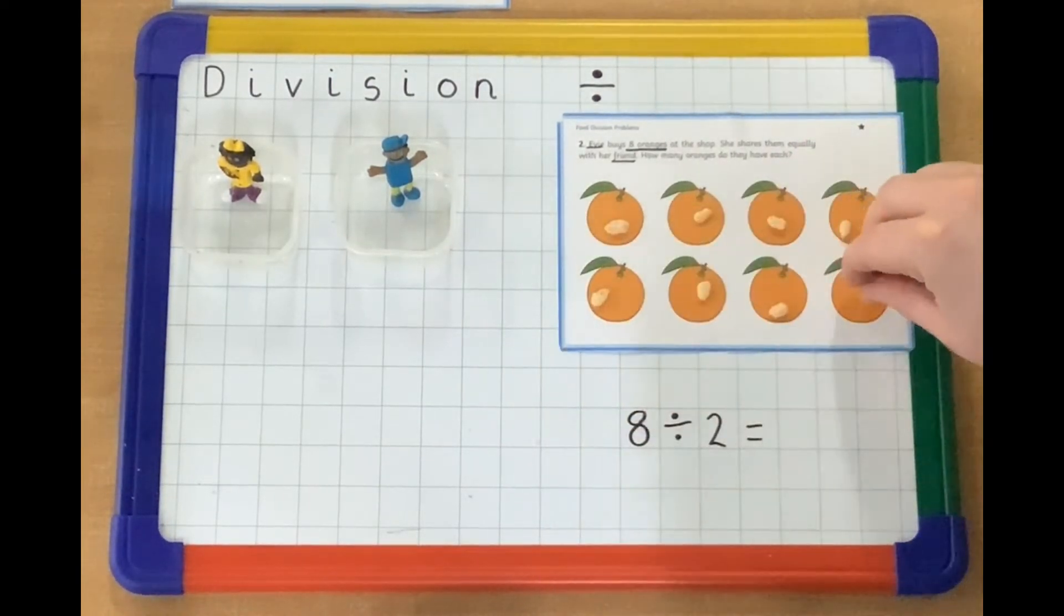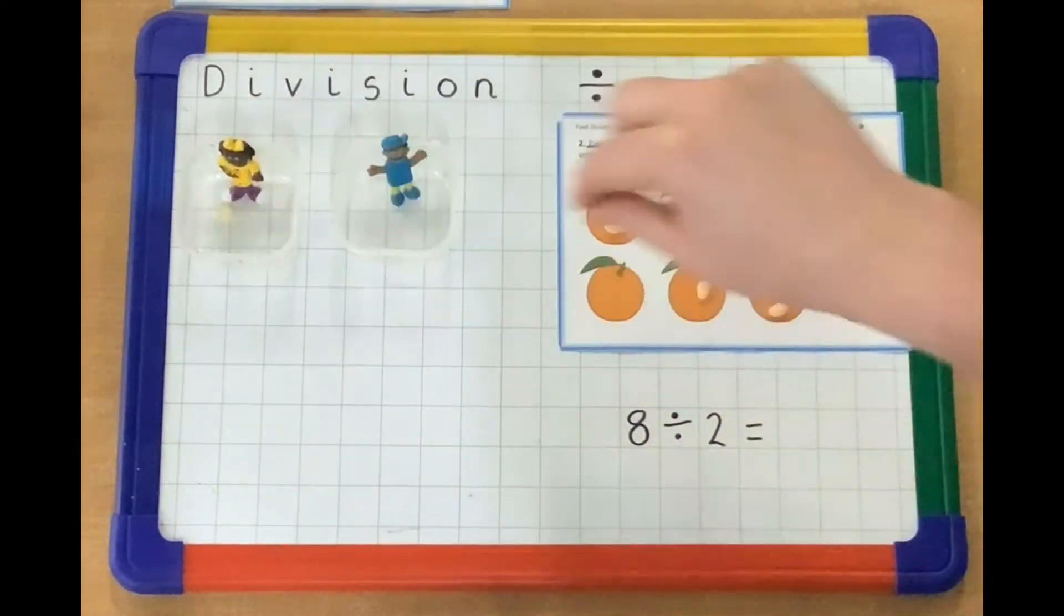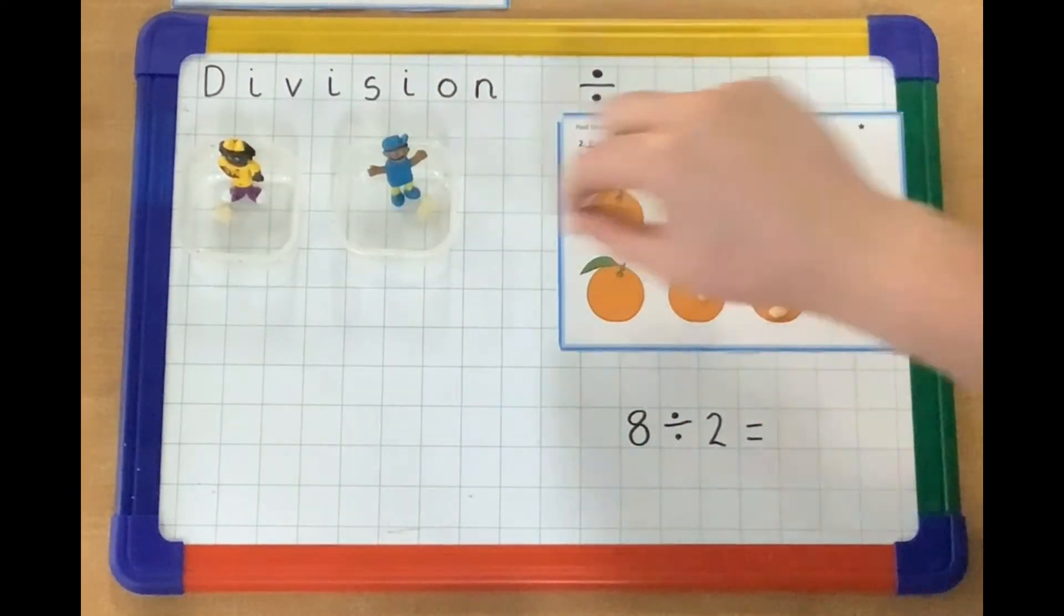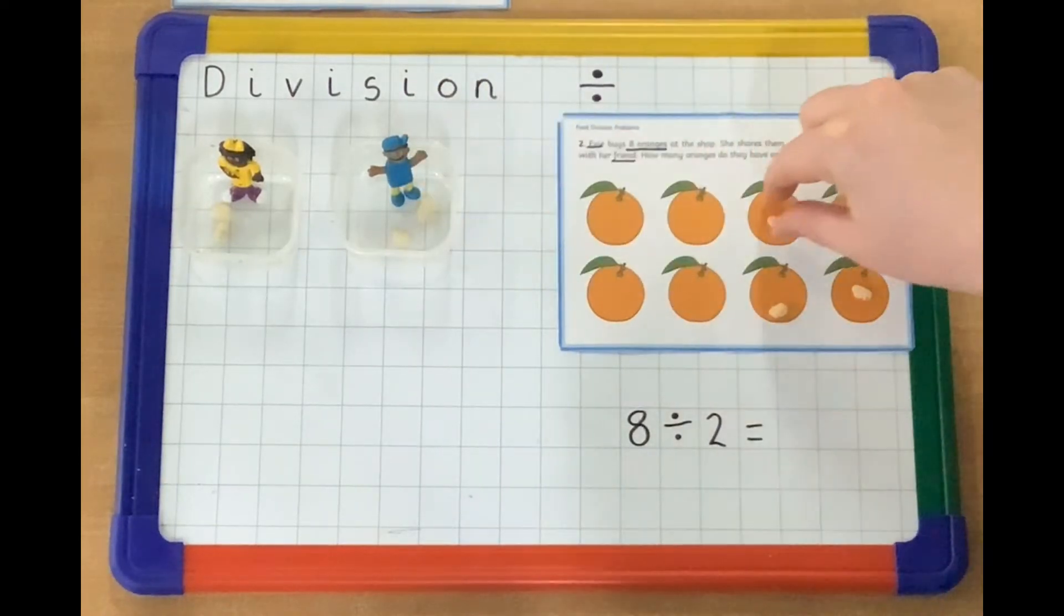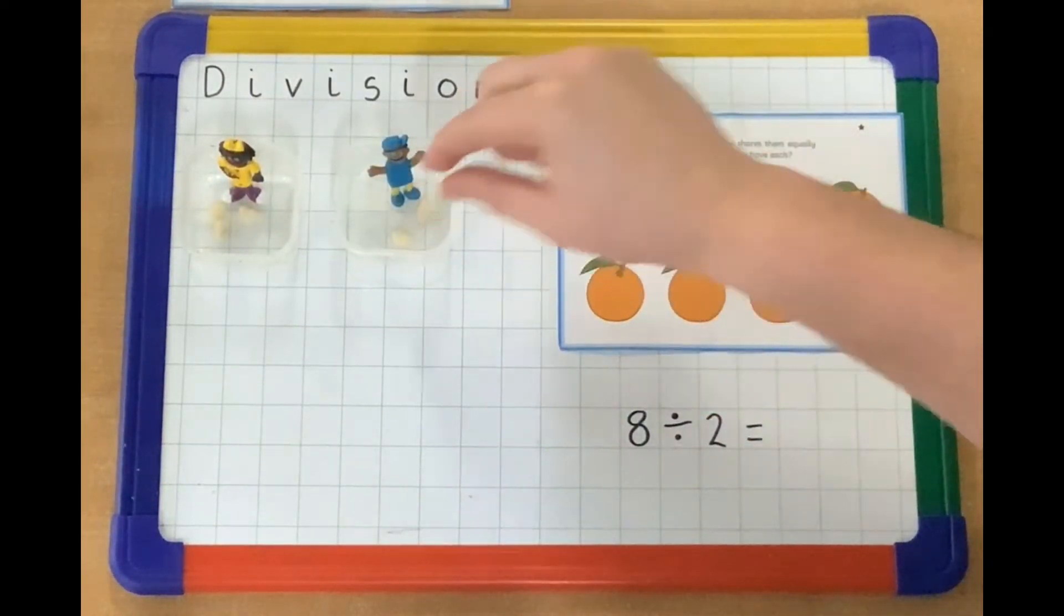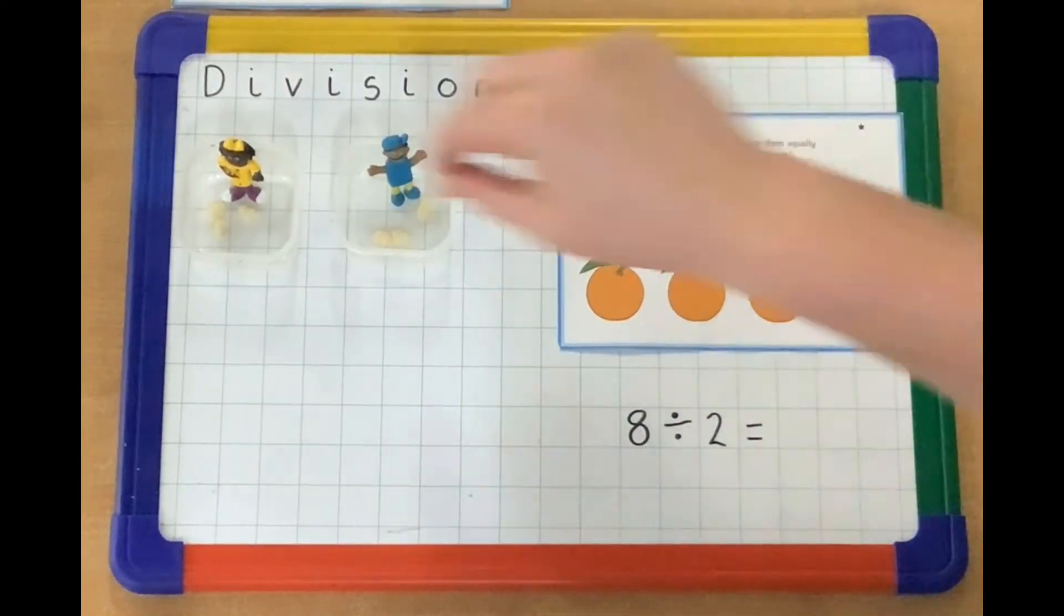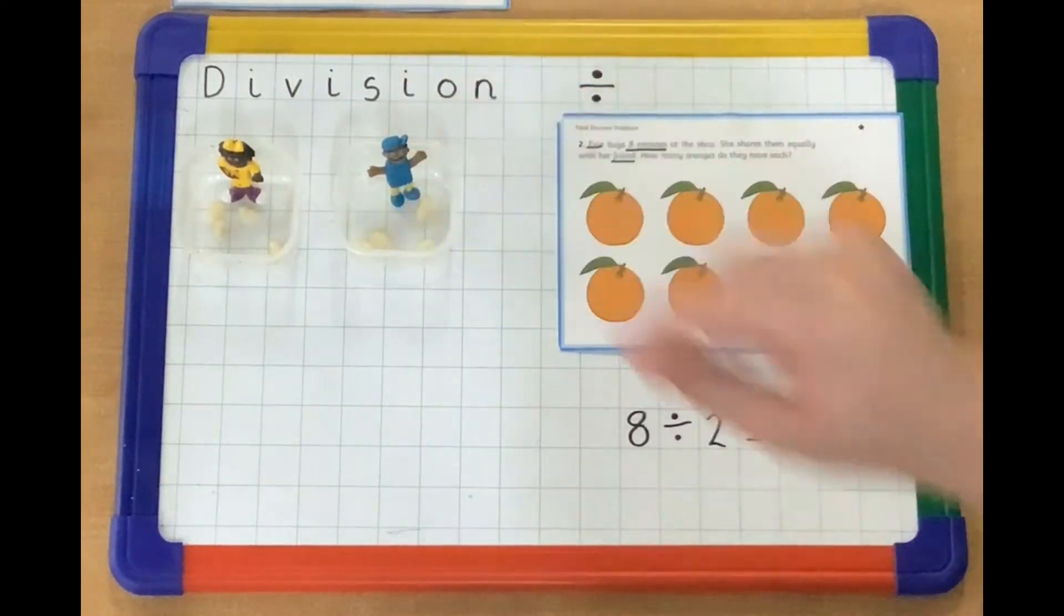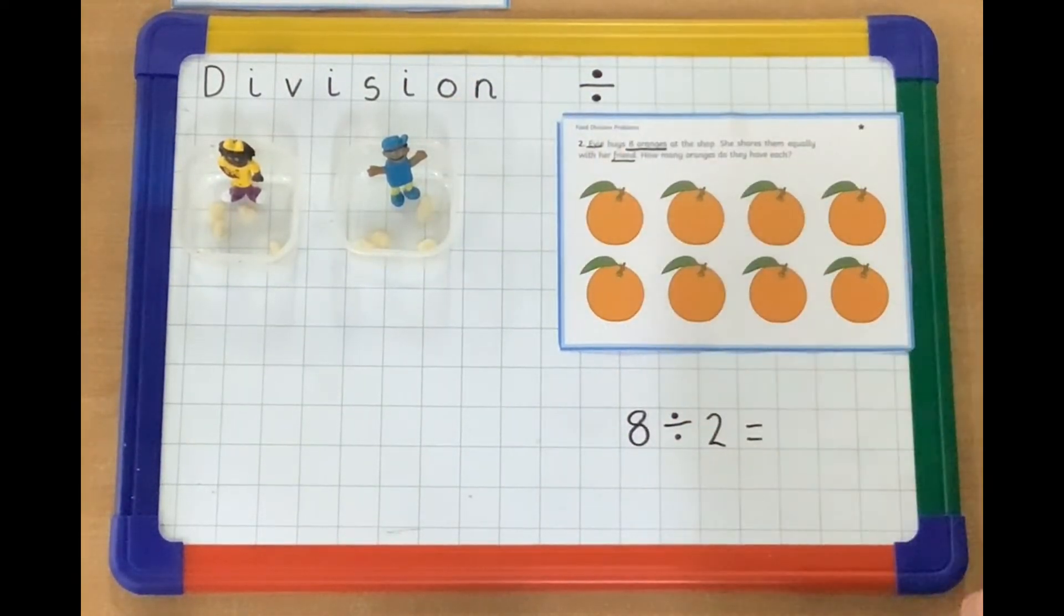What we need to do then is we need to share these equally. So we're going to go one for Evie, one for her friend. One for Evie, one for her friend. One for Evie, one for her friend. Once we've shared out all of the oranges, now all the oranges have gone,